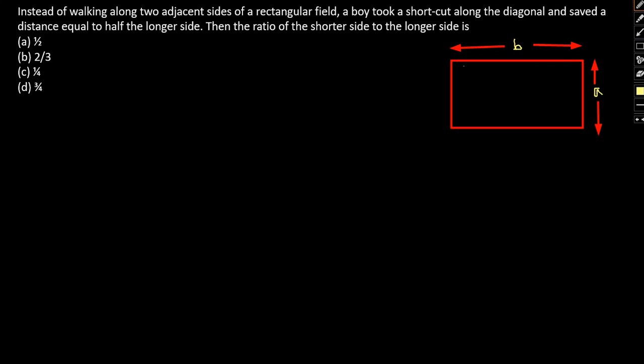So he basically saved a distance which is equal to half. So he basically walked along the diagonal.